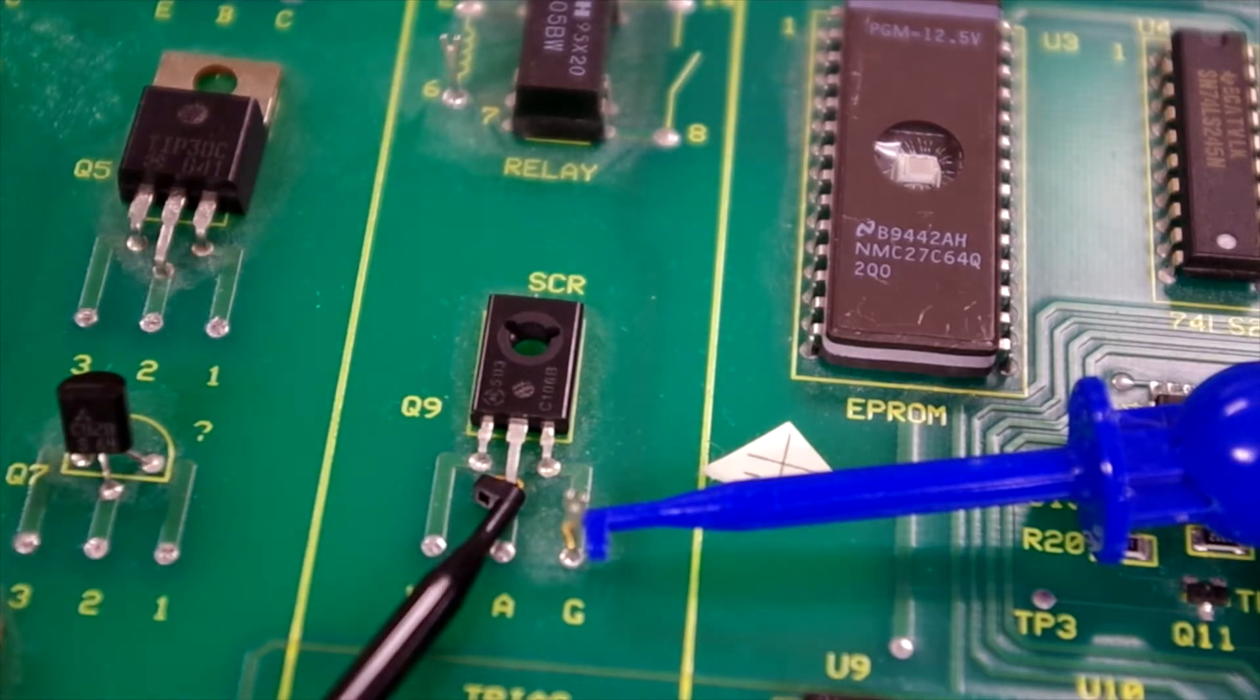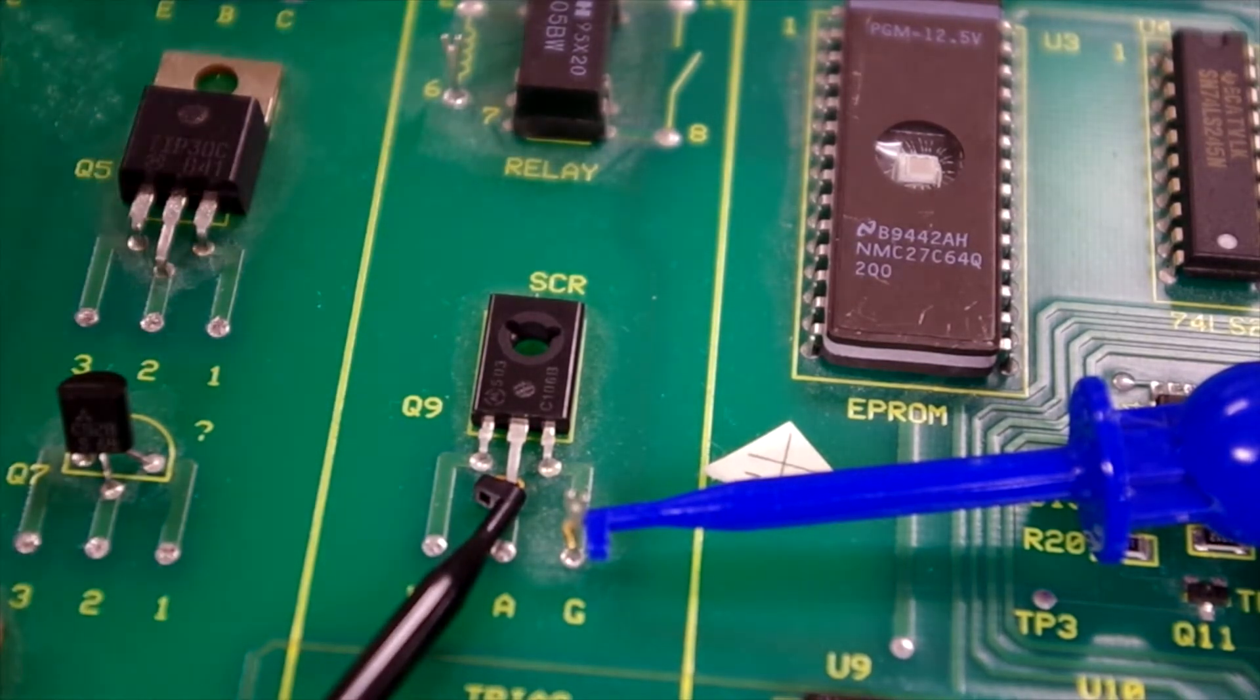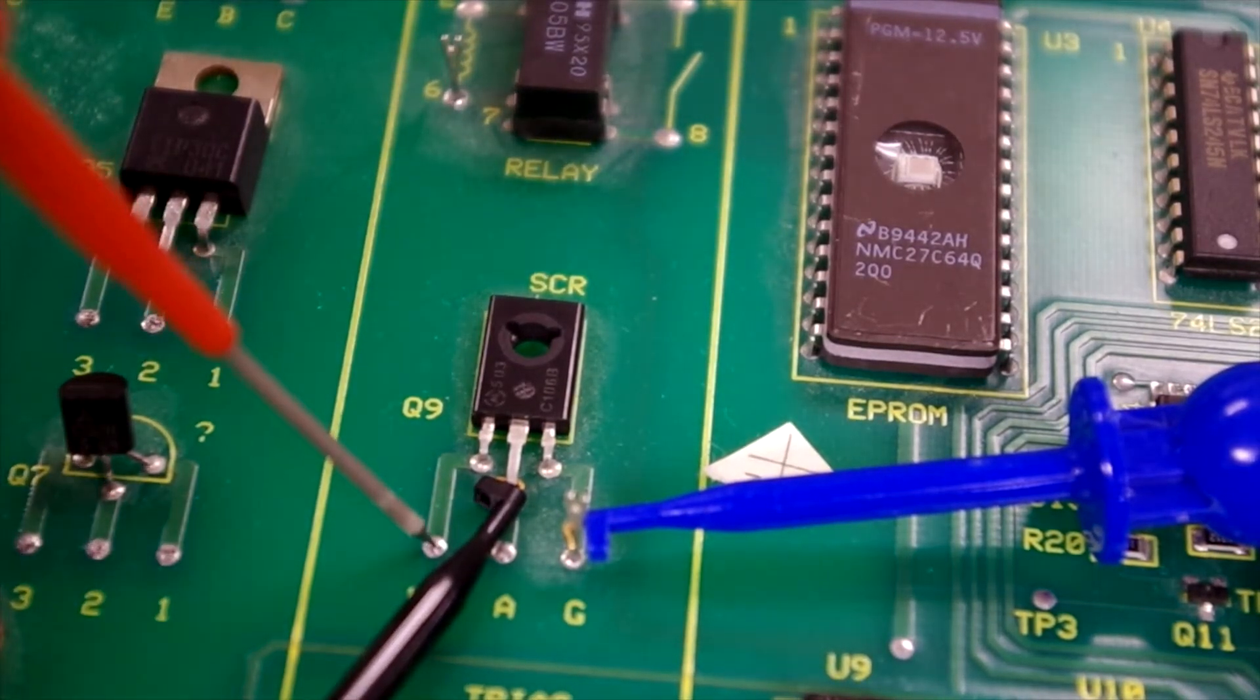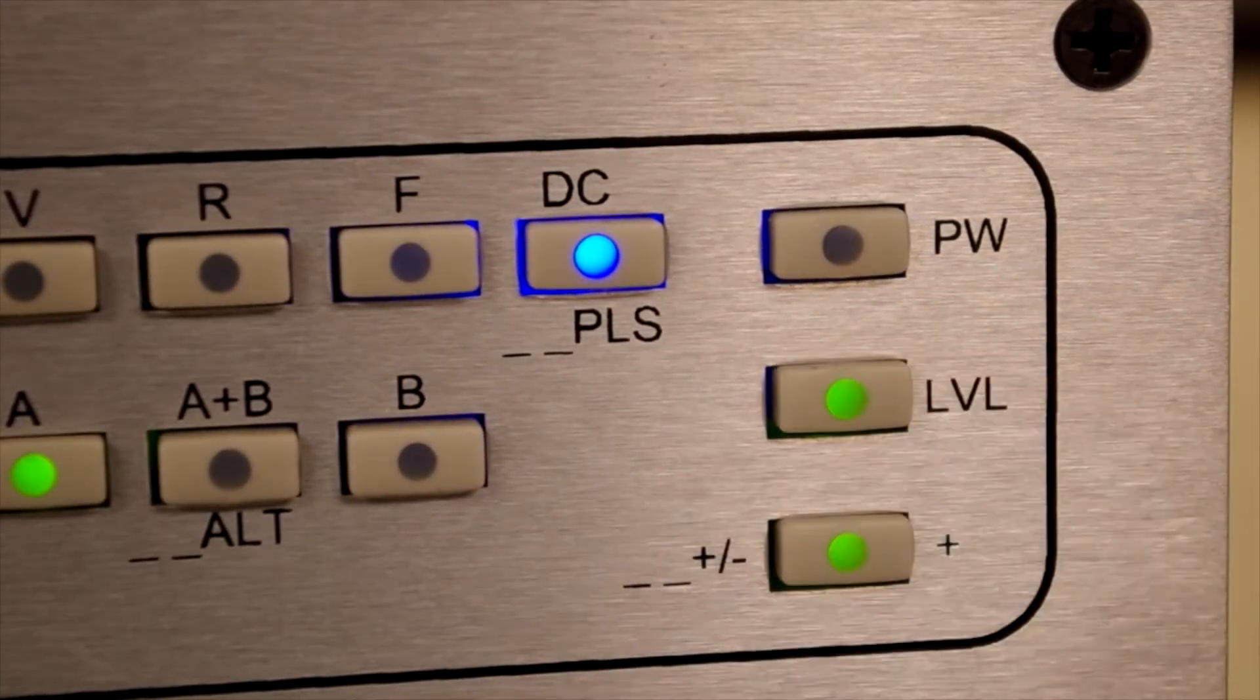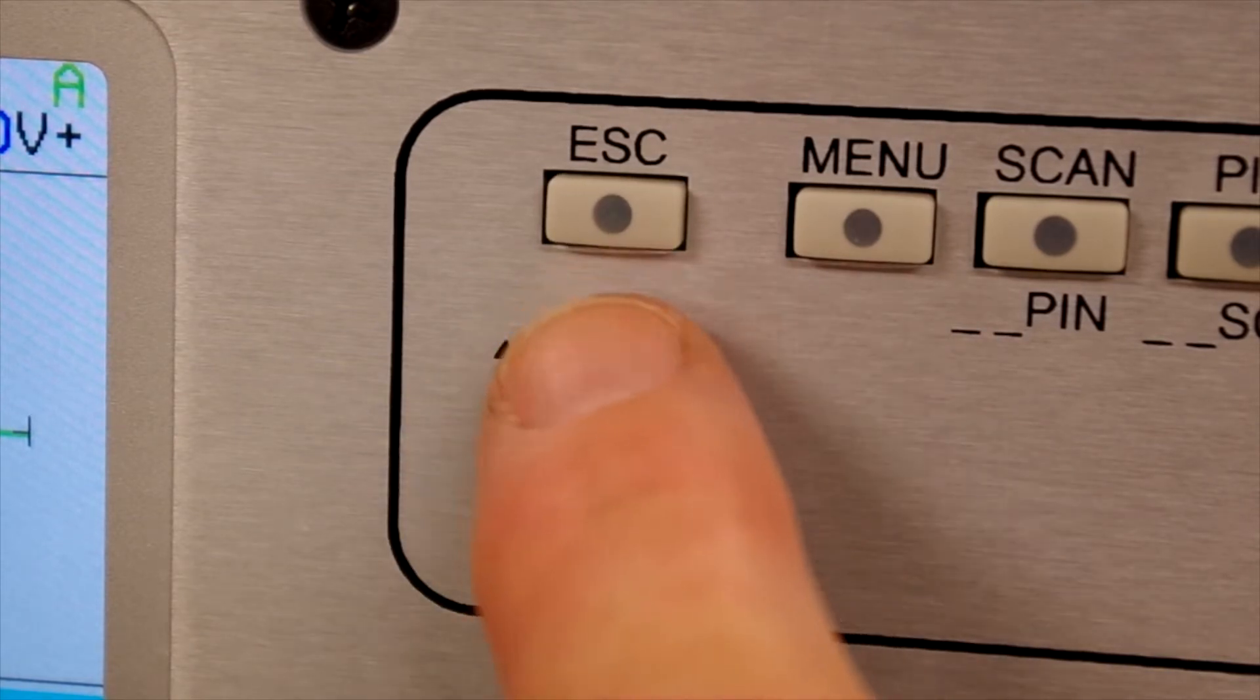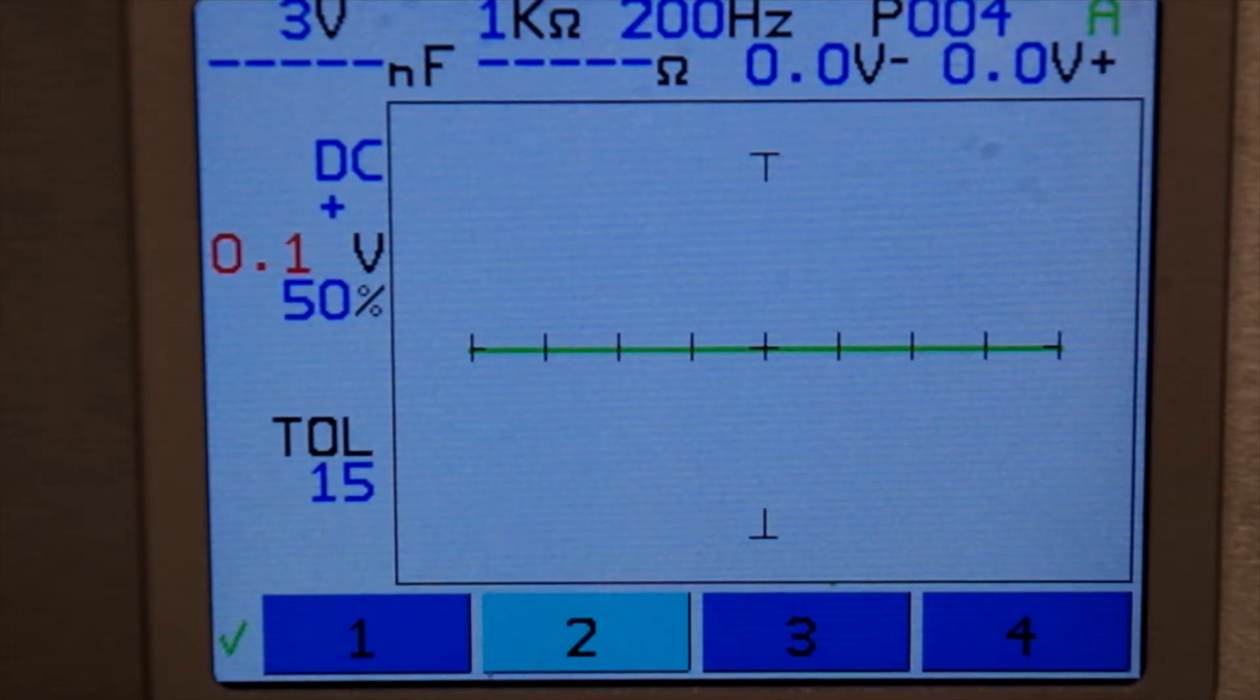Testing an SCR is accomplished by connecting the pulse generator to the component gate and holding the tracker probes across the anode and cathode. The pulse generator is then adjusted until the device reaches its breakdown threshold, indicated by the diode signature on the tracker LCD.